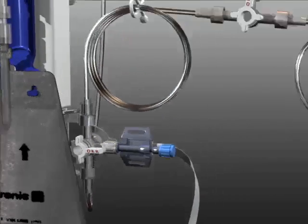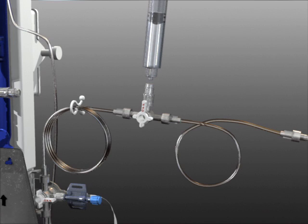To prime the system, fill a 30 cc or larger syringe with preservative-free normal sterile saline. Using sterile technique, attach the syringe to the patient line stopcock injection site.